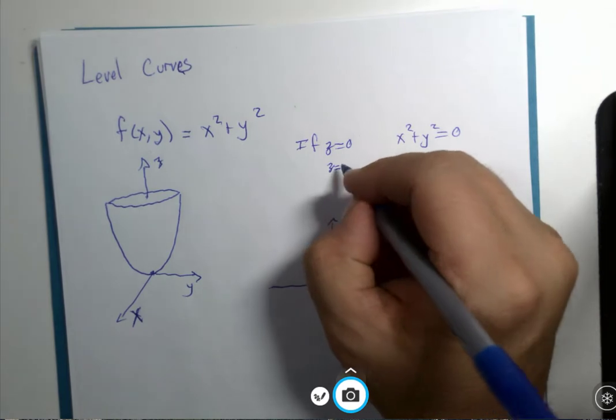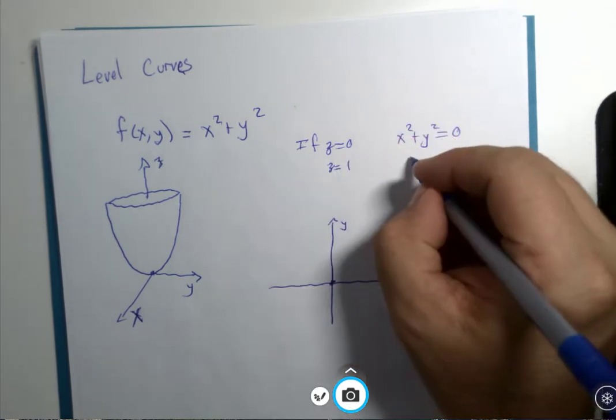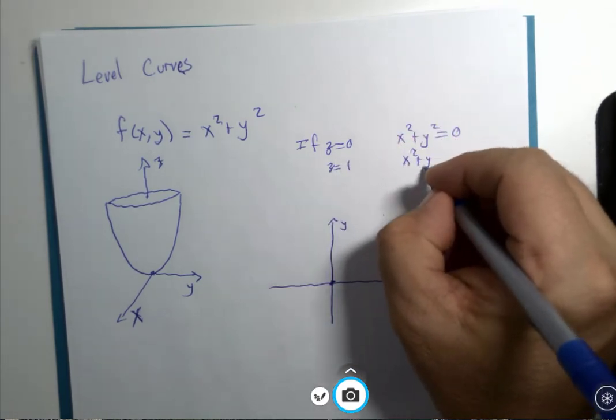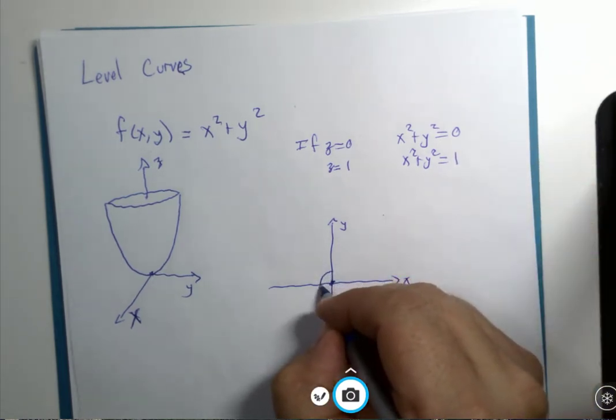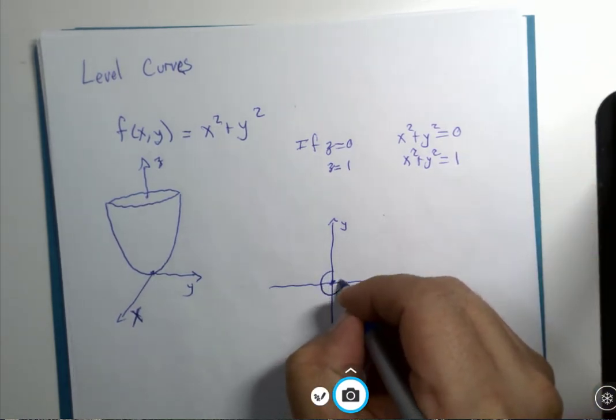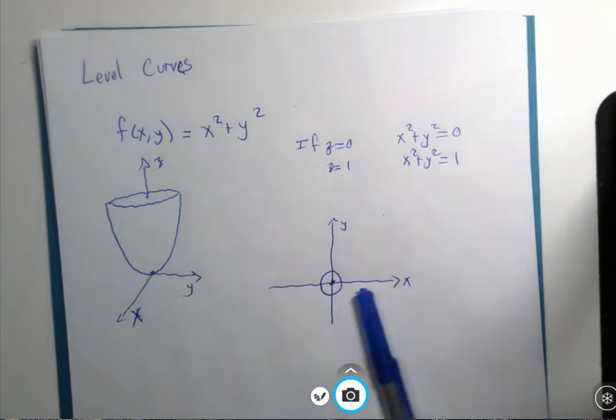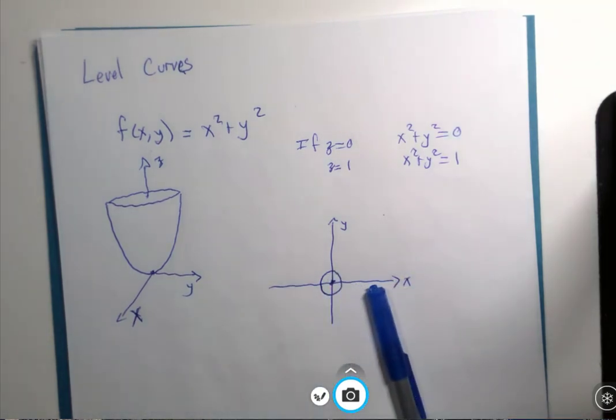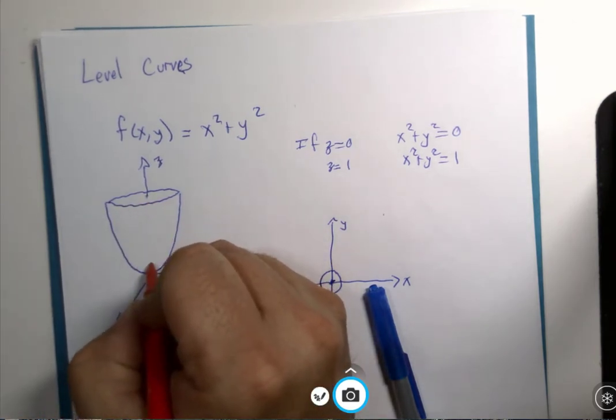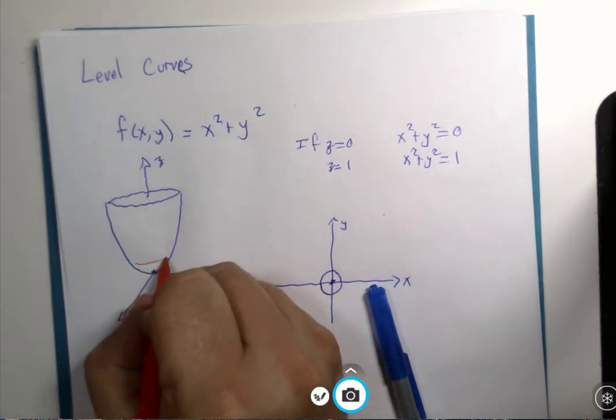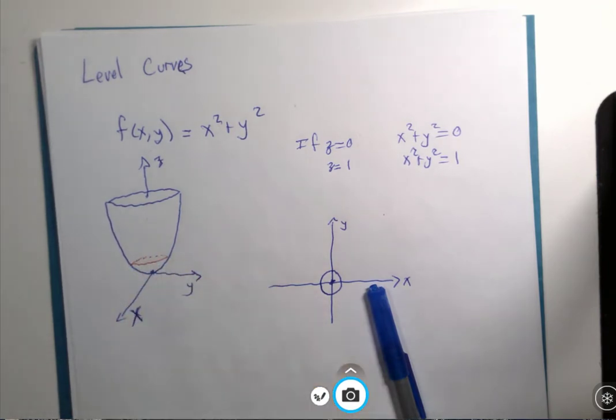If z were to equal 1, x squared plus y squared equals 1, well then you'd have a circle of radius 1. And that would be like looking at the three-dimensional graph and saying, well let's go up to the first level of our building, and it's that circle right there.